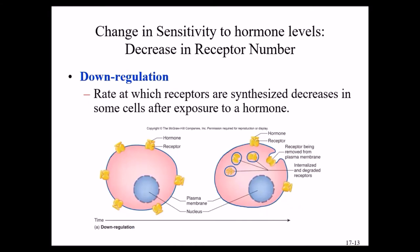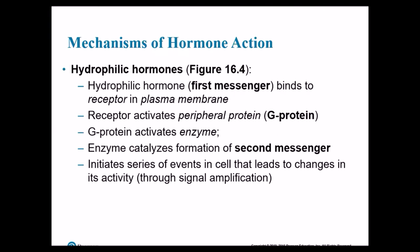The opposite of upregulation is downregulation — decreasing the number of receptors to make a cell less sensitive to a hormone. You can either decrease the amount of hormone or decrease the number of receptors. Because there are two different classes of hormones — hydrophilic and hydrophobic — each category, due to its chemistry, acts differently. Hydrophilic hormones are water-soluble and must have a receptor on the outside of the cell membrane, so the way they act is different from a hydrophobic hormone.